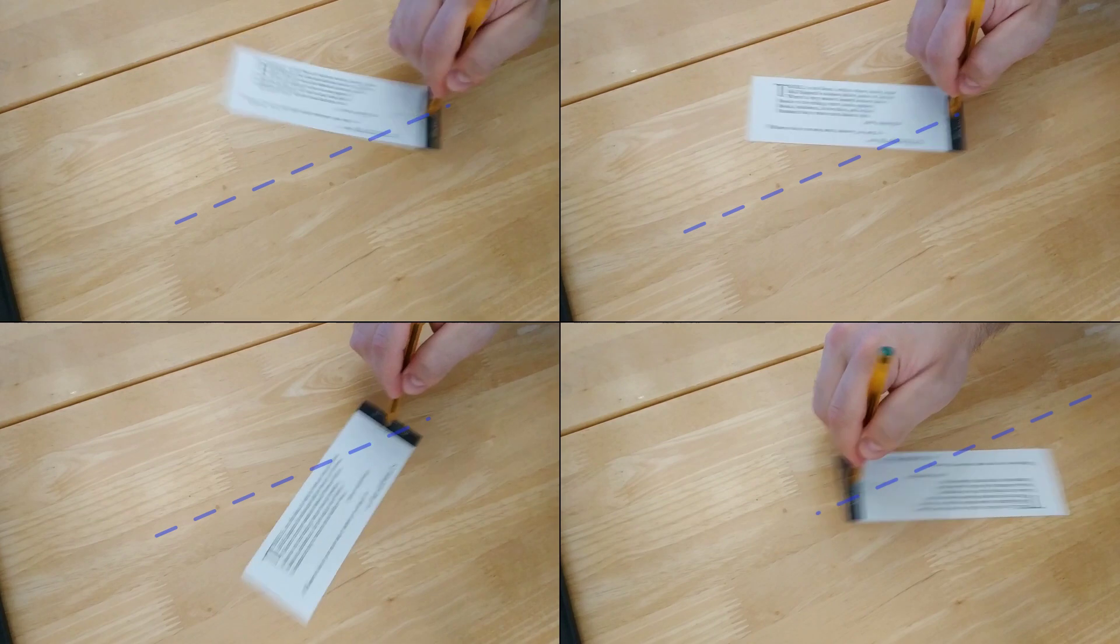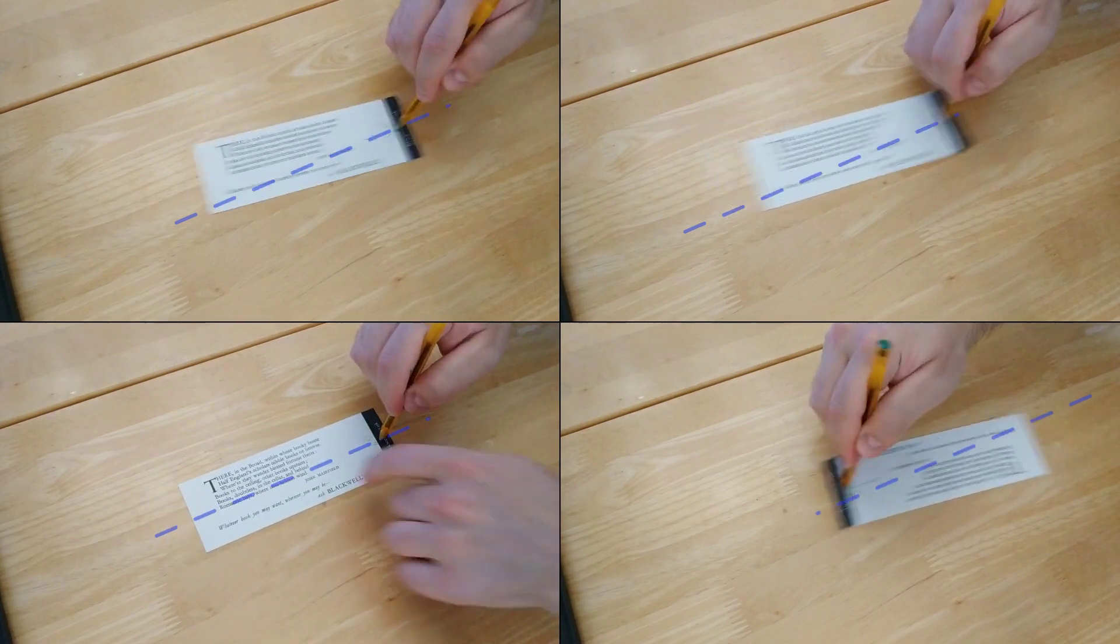Then move the bookmark up and down quickly, and you'll see that the bookmark rotates until it aligns with the axis on which the tip of the pen is moving.